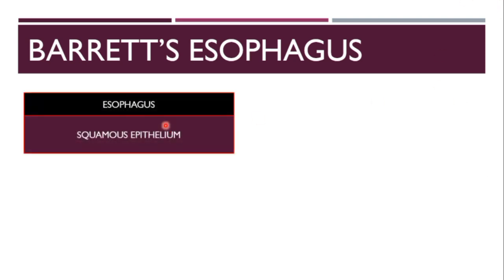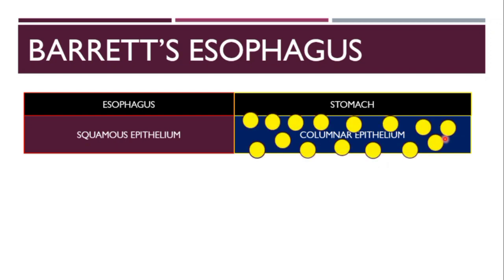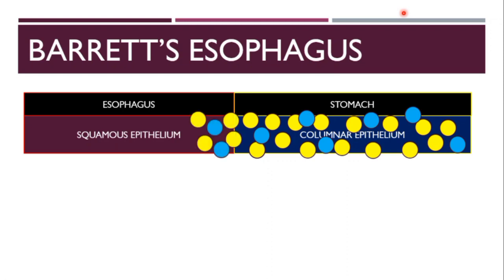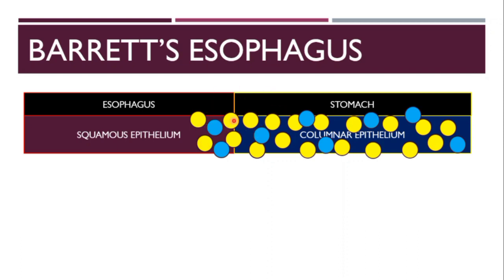Now let's talk about Barrett's esophagus. The esophagus has squamous epithelium and the stomach has columnar epithelium. In the stomach, parietal cells produce acid and goblet cells produce mucin. In gastroesophageal reflux disease, those acids ascend up chronically — they go up and they go down repeatedly. Due to chronic acid exposure, this part of the esophagus undergoes metaplasia, meaning a change from one epithelium to another. Since there is chronic acid exposure, the squamous epithelium changes to a suitable columnar epithelium.